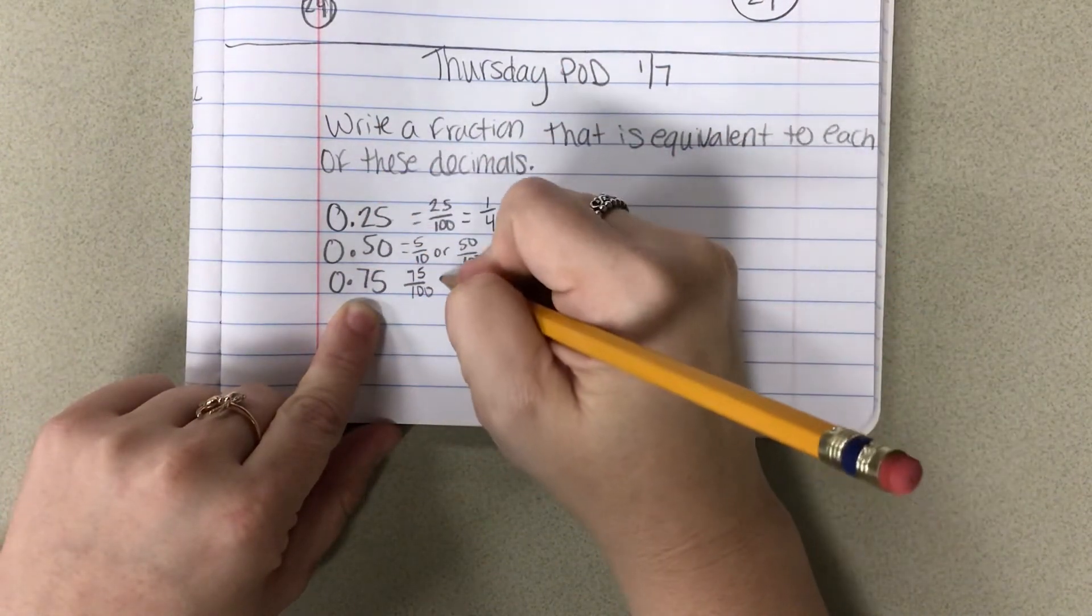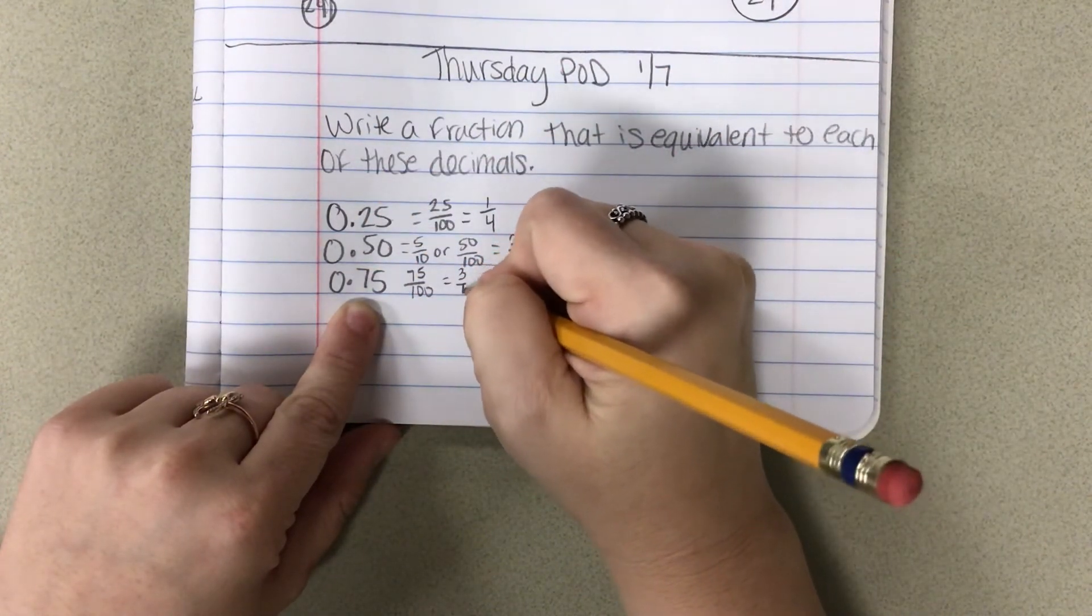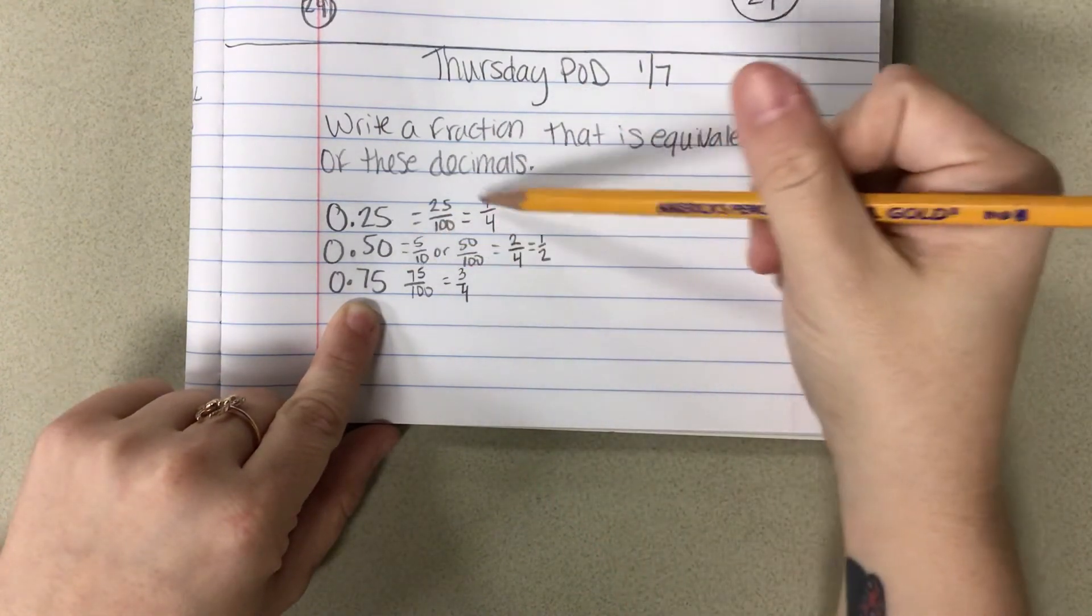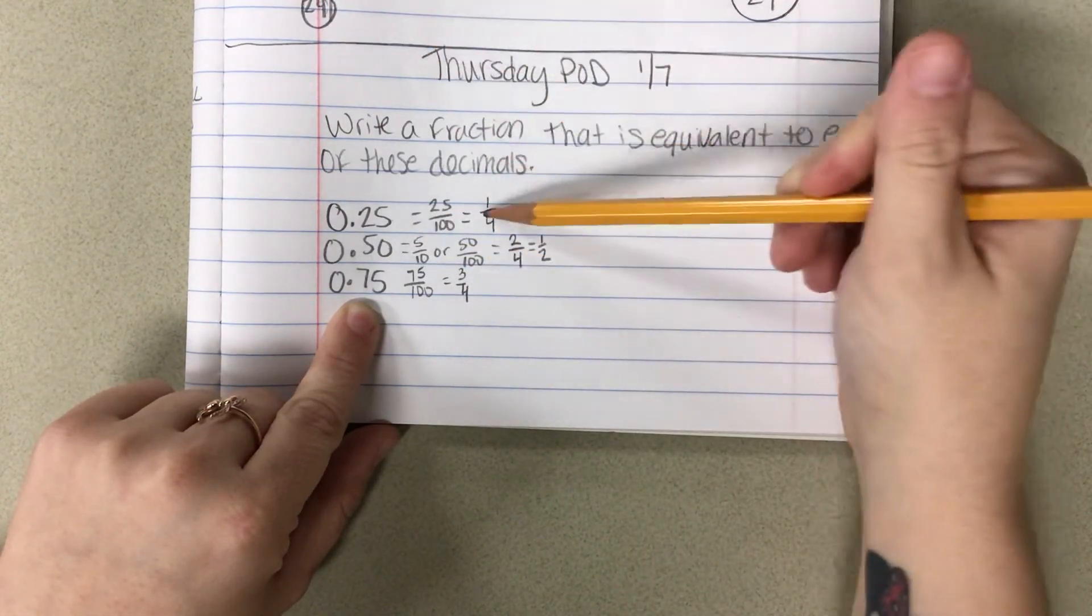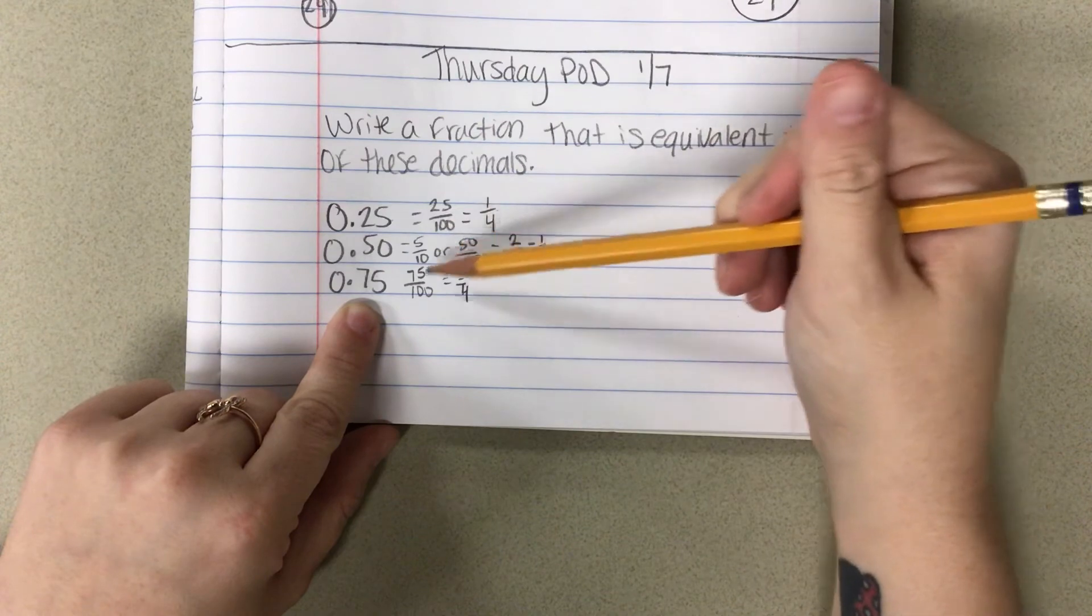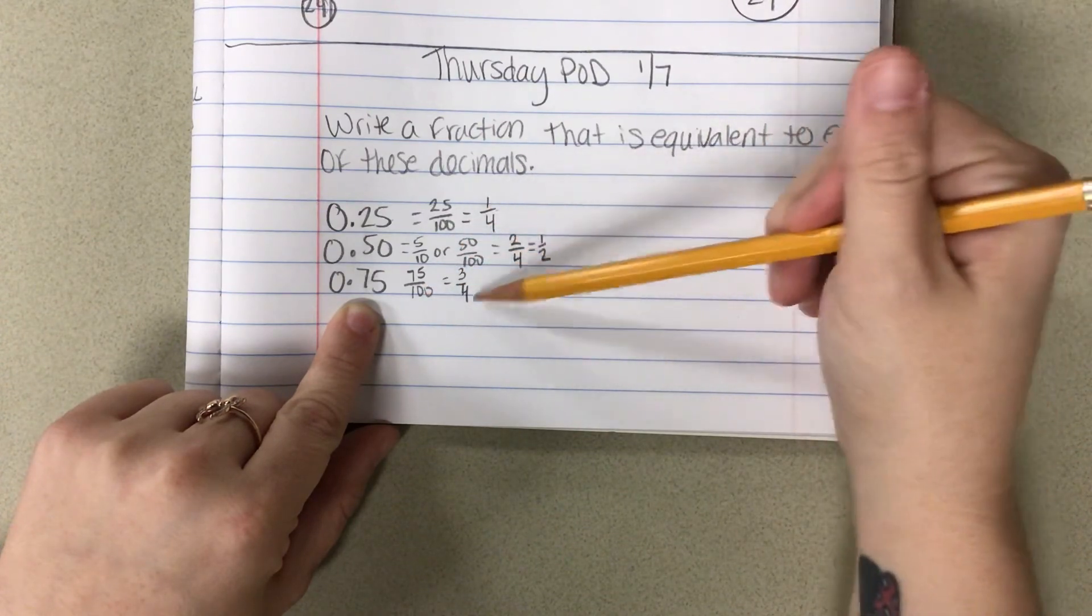75 hundredths is going to be the same as 3 quarters out of 4 quarters. So you can kind of think about these as well. If you can't remember these, then you can always go to the bigger numbers and then simplify to get smaller as well.